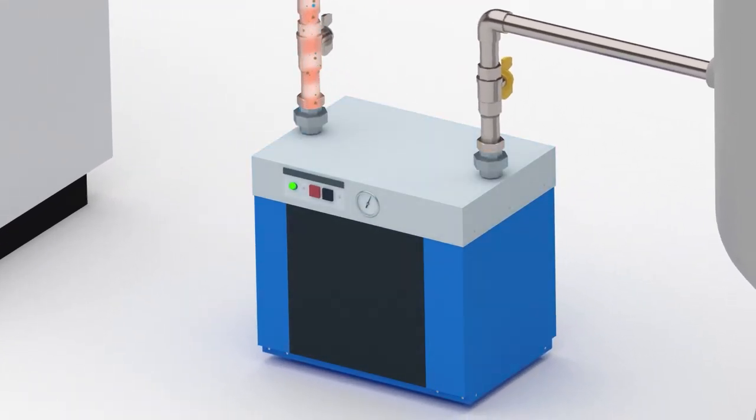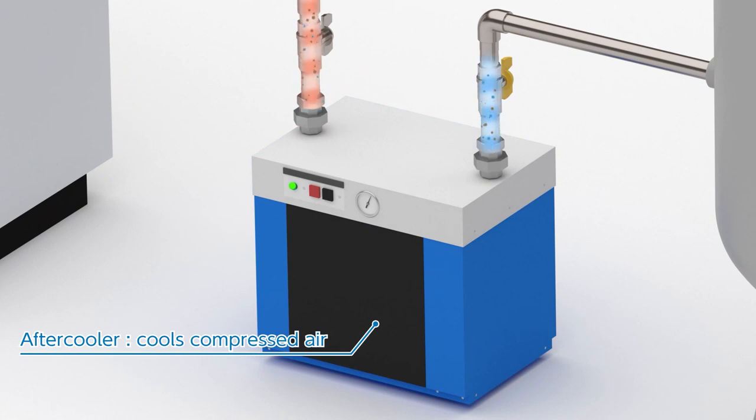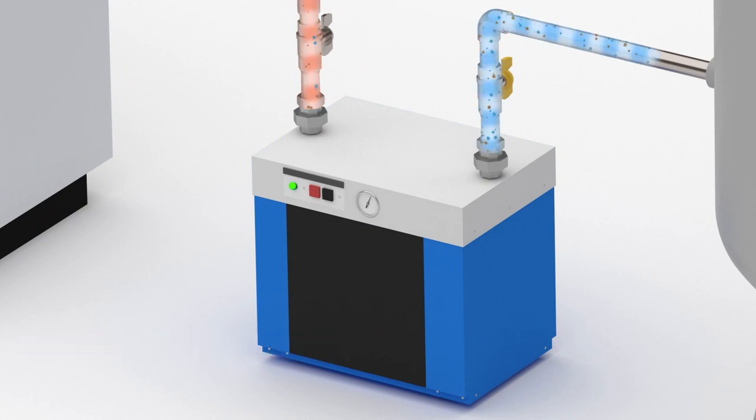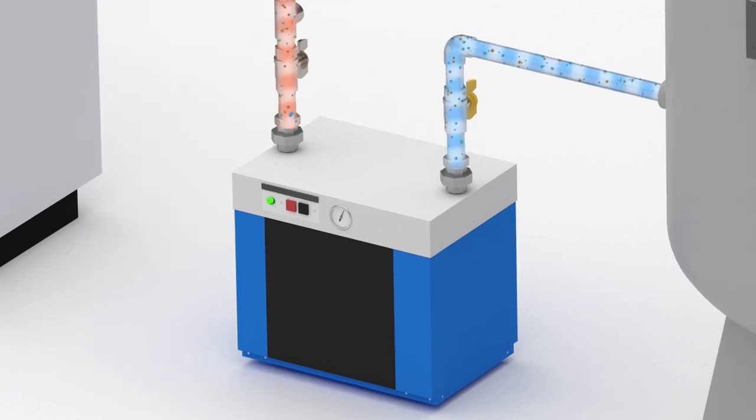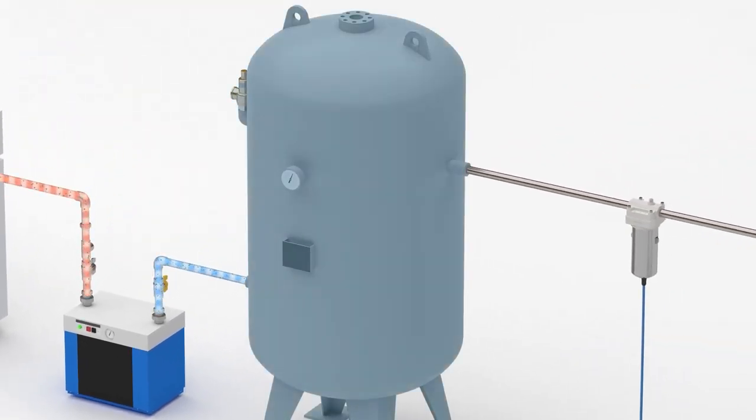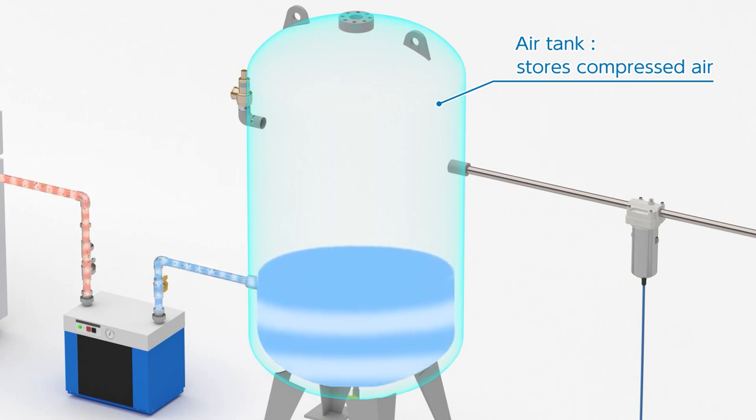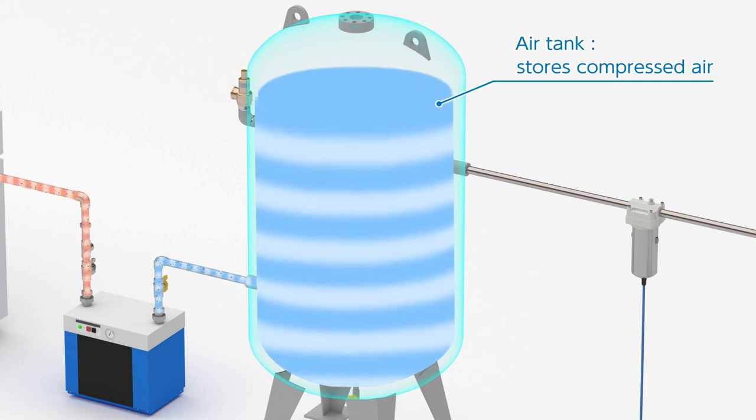The heated compressed air is then passed through an after cooler to cool it down. The cooled compressed air is then piped for storage to an air tank for availability on demand for the various stages of production.